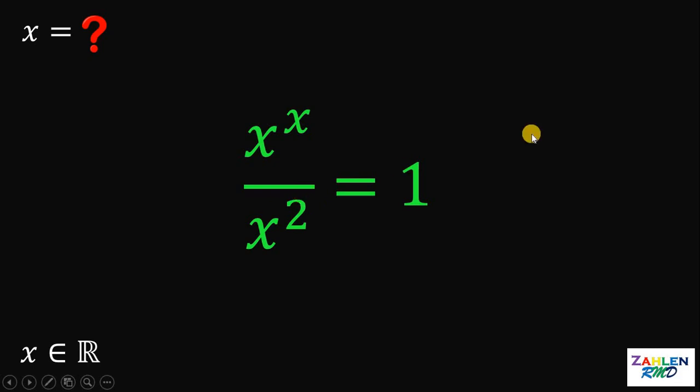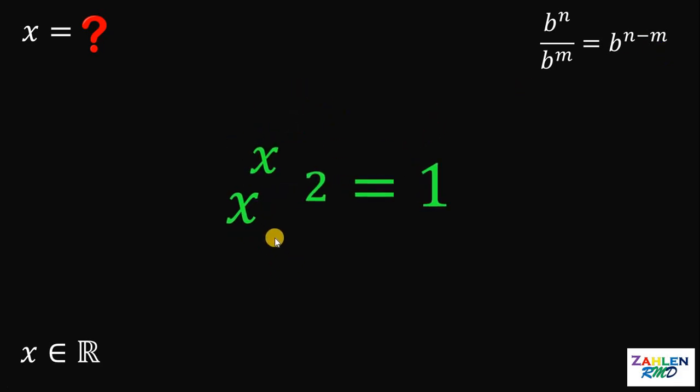On the left hand side, let's use some laws of exponent. If we have b raised to n over b raised to m, we have the same base but different exponent. It is equivalent to b raised to n minus m. Therefore, the left hand side can be written as x raised to x minus 2.